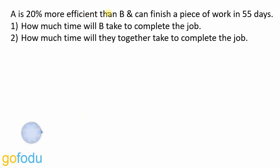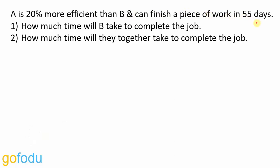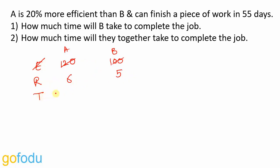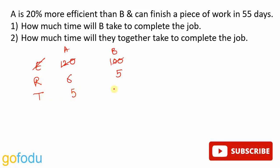A is 20% more efficient than B and can finish a piece of work in 55 days. If efficiency of B is 100, A is 20% more efficient, so efficiency of A will be 120. Instead of 100 and 120, I can write 5 and 6. Since rate of work is directly proportional to efficiency, rates of A and B are in ratio 6 is to 5, and time taken will be in ratio 5 is to 6.